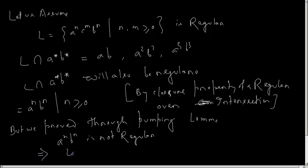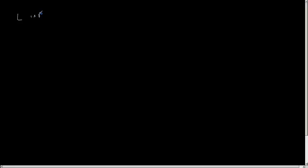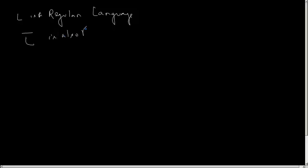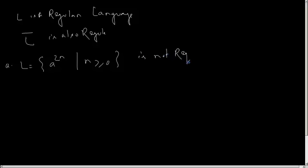Similarly, you can prove various languages are not regular based on the closure property of a regular language under complementation. This implies: if L is a regular language, then L-bar, which is the complementation of L, is also regular. As an exercise: suppose L defined by a to the power 2n — that is, even number of a's — where n is greater than or equal to 0, is not regular. This you can prove through pumping lemma.